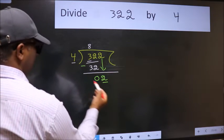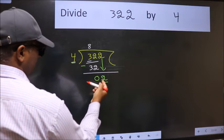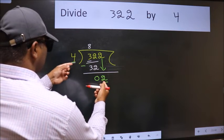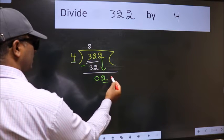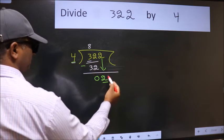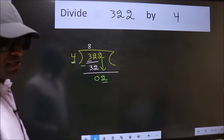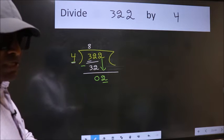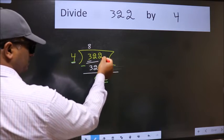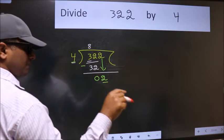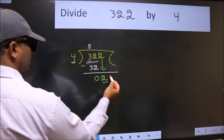Here we have 2 and here 4. 2 is smaller than 4. So what many do is they directly put a dot and take 0, which is wrong. Why is it wrong? Because you just brought this number down, and in the same step you want to put a dot and take 0.